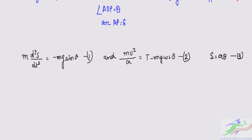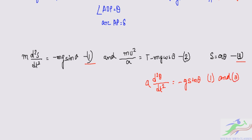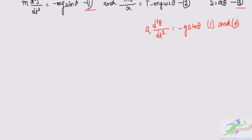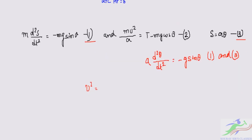From equations 1 and 3 we get A·d²θ/dt² = −g sinθ. Multiplying both sides by 2A dθ, we obtain v² = (A dθ/dt)² = 2AG cosθ + C, where C is a constant of integration.